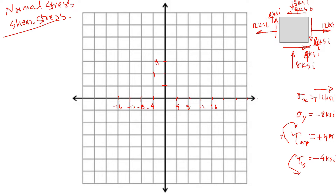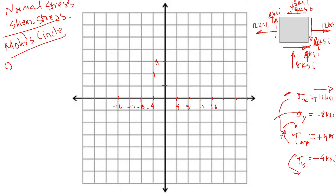To calculate the combined effect, we use Mohr's circle — we could use equations, but we'll use the circle to visualize the combined effect of shear stress and normal stress. We plot two points: the x face values and the y face values. On the horizontal axis we plot normal stress, and on the vertical axis we plot shear stress.